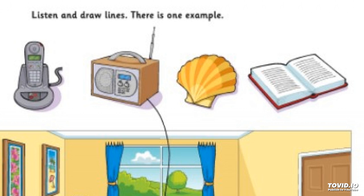Put the radio on the bookcase. Sorry? Put the radio where? On the bookcase. Right. Can you see the line? This is an example. Now you listen and draw lines.